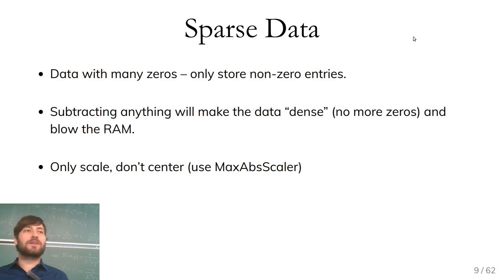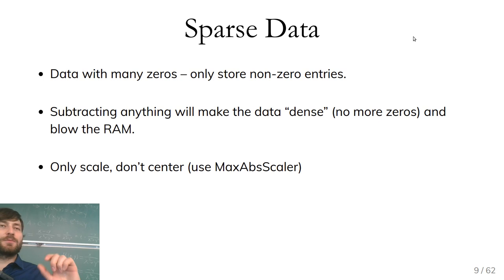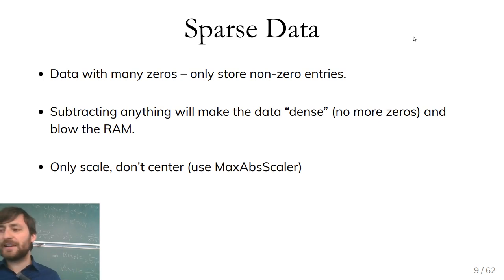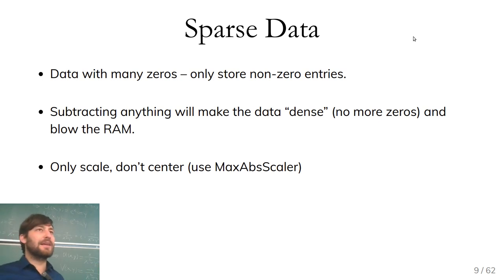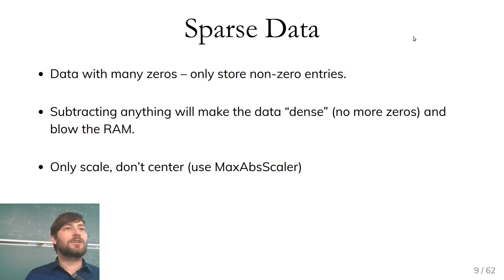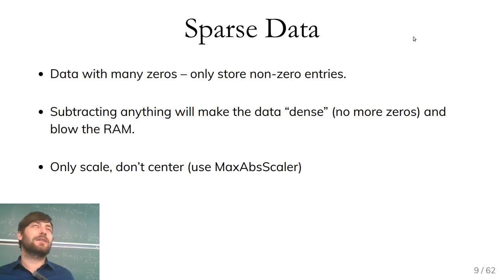One way to work around this: only do the scaling, don't do the centering — don't subtract the mean. If you multiply zero by anything it's still zero. So you can use the MaxAbsScaler in scikit-learn, which will only scale without shifting the mean, so it remains sparse afterwards.